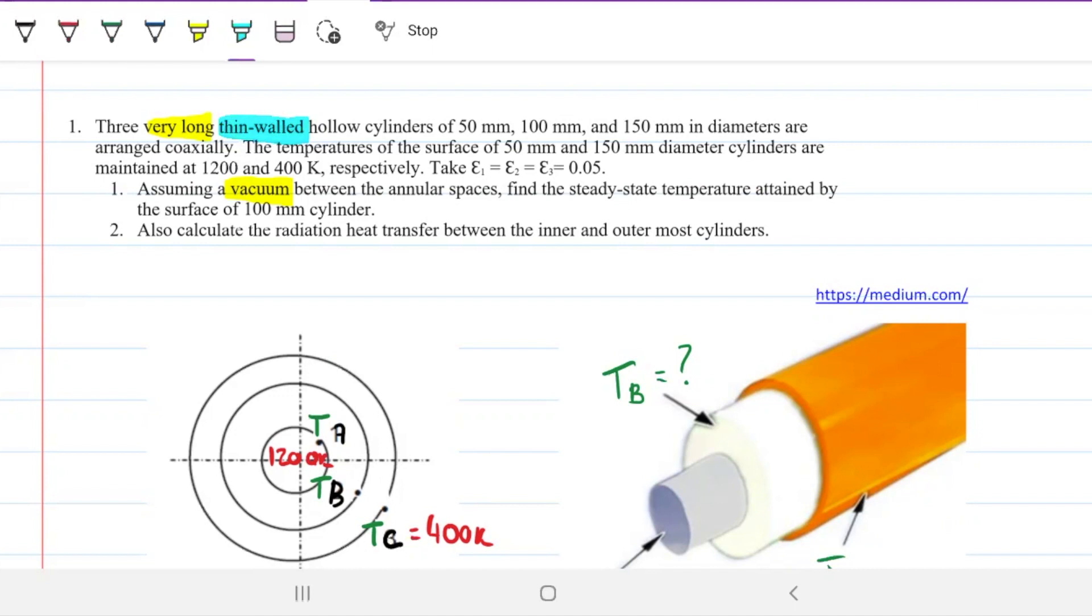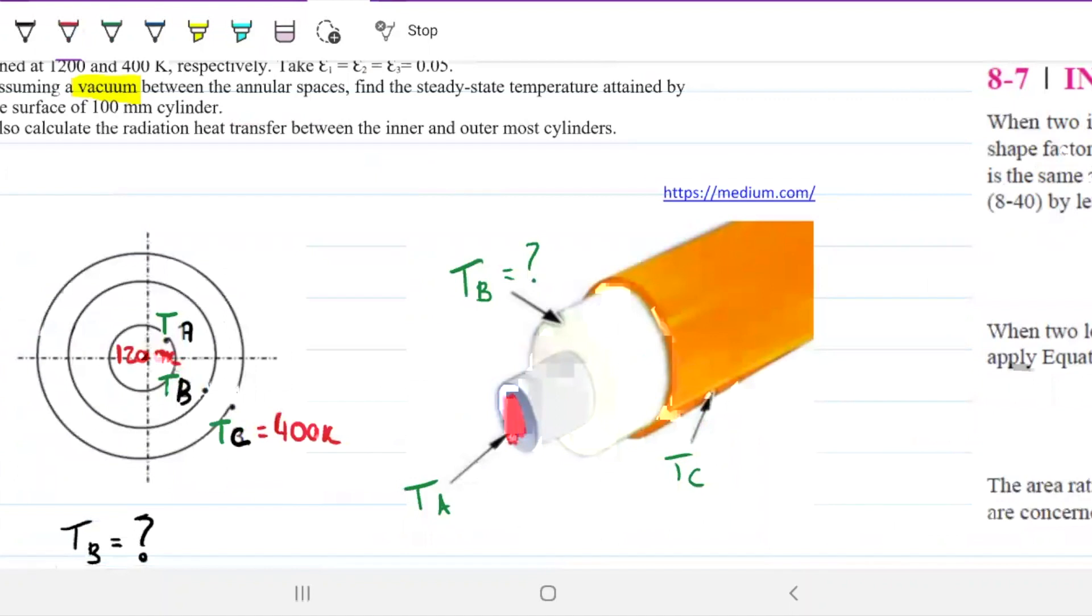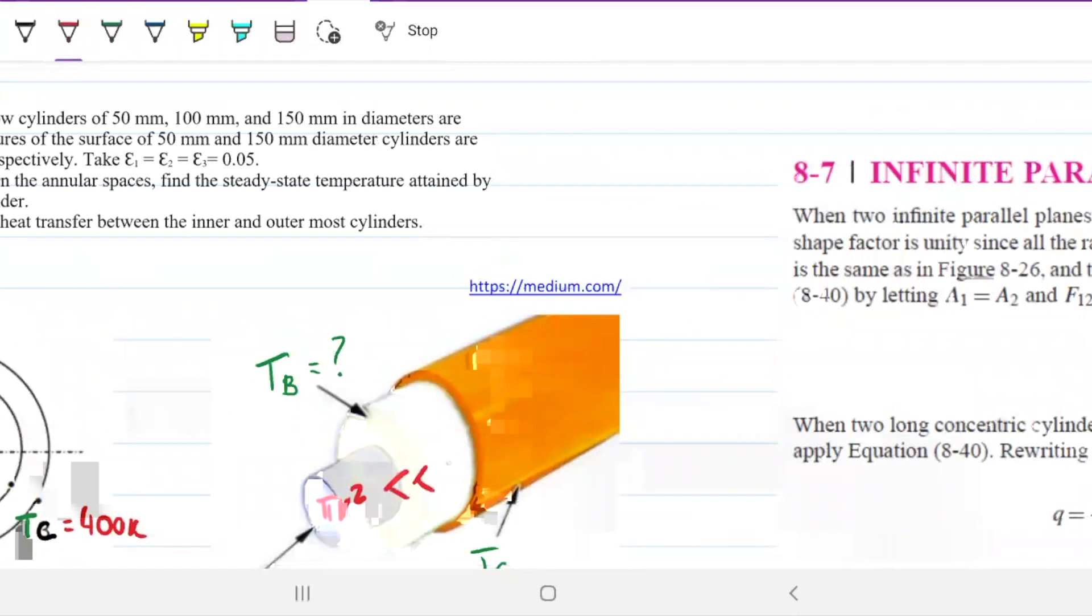The next thing that is important is that it's very long. It being very long means two things. First, that this area over here is negligible in comparison to this area over here. Mathematically speaking, the pi r squared is negligible or is very small in comparison to the 2 pi r L.